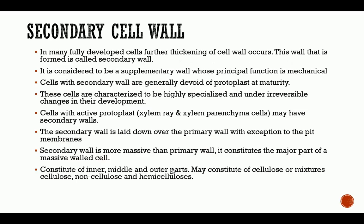In many fully developed cells, further thickening of the cell wall occurs. This wall that is formed is called the secondary wall. It is considered a supplementary wall whose principal function is mechanical — it gives structural composition to the cell. Cells with a secondary wall are generally devoid of protoplasts at maturity, and they undergo irreversible changes in their development. Note the difference between the primary and secondary cell wall in terms of reversibility and irreversibility.